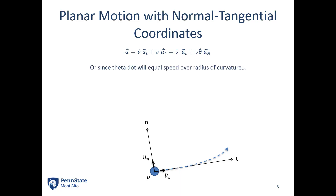One last substitution: V times theta-dot is also equal to V squared divided by the radius of curvature, rho. So if you know the geometry of the turn rather than the rate of turning, V divided by rho equals theta-dot, and substituting gives V squared over rho for the normal acceleration component. So both V times theta-dot and V squared over rho are valid expressions for the normal component of acceleration.